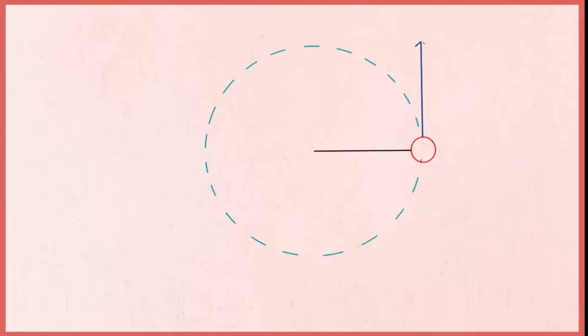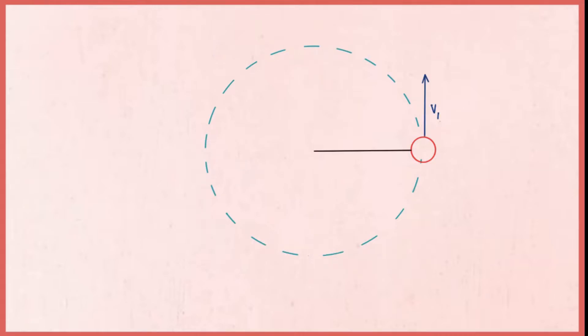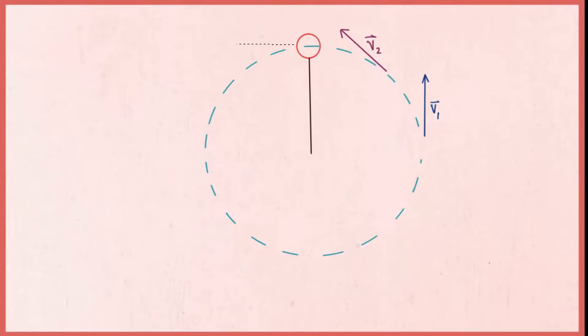As we know that at every instant, the velocity of a tennis ball undergoing angular motion is tangent to the circle, just like we have discussed in a couple of videos back. Let's say we have a velocity vector at the first instant, v1. After some time, velocity vector is v2 and at other intervals,